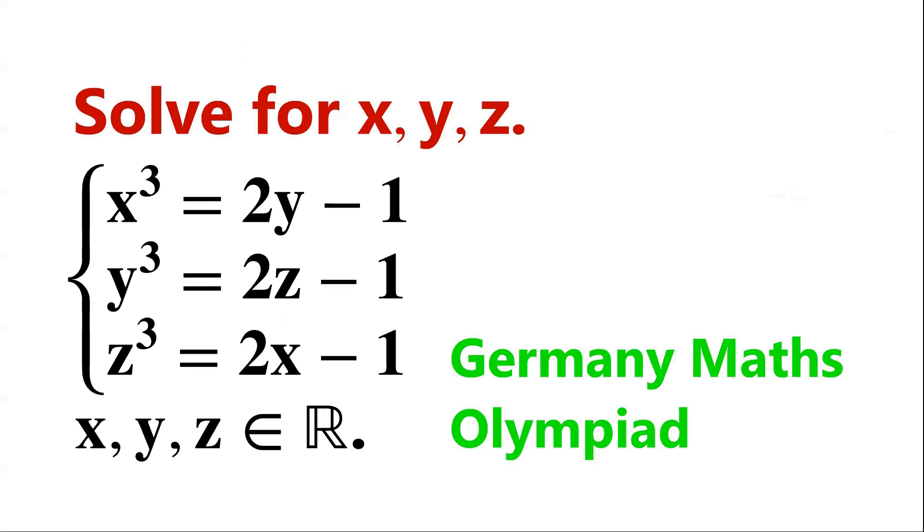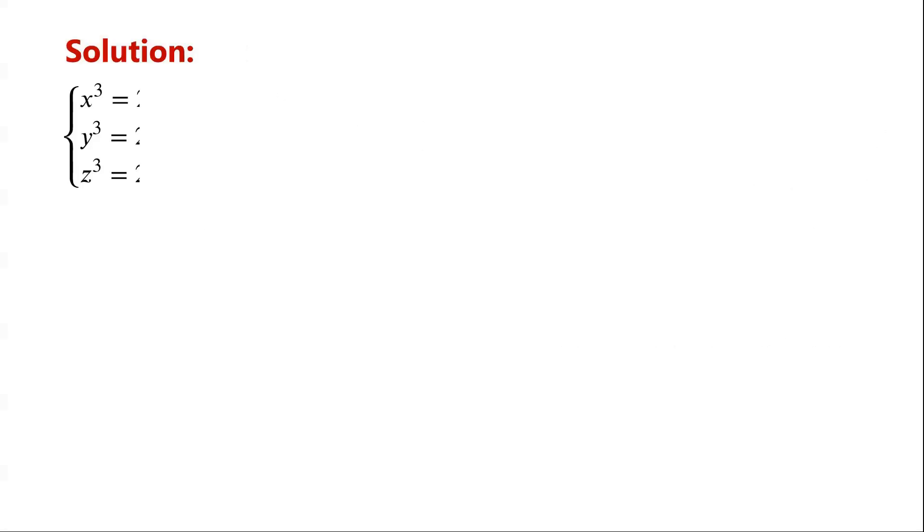Solve the system of equations where x, y, and z are real numbers: x³ = 2y - 1, y³ = 2z - 1, z³ = 2x - 1. Notice that x, y, and z have the same form of equation relating them cyclically.